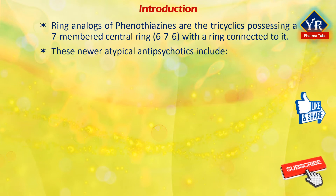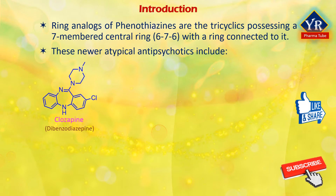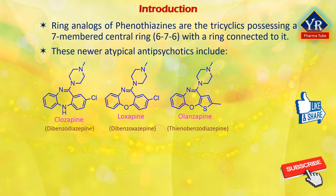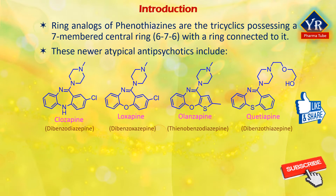These atypical antipsychotics include: dibenzodiazepines, e.g. clozapine with a chloro substituent at C2; dibenzoxazepines, e.g. loxapine with a chloro substituent at C2; thienobenzodiazepines, e.g. olanzapine without a C2 substituent; and dibenzothiazepines, e.g. quetiapine without a C2 substituent.